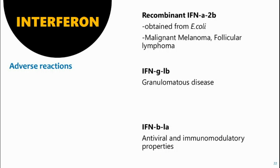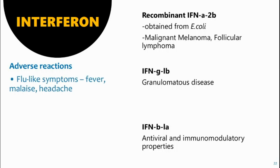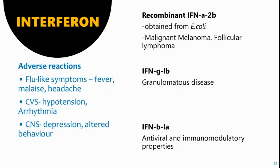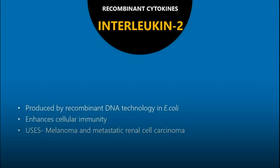Interferons are of many types, some of which are recombinant IFN-alpha-2b, IFN-gamma-1b and IFN-beta-1a. Recombinant IFN-alpha-2b is obtained from Escherichia coli and is used in malignant melanoma and follicular lymphoma. IFN-gamma-1b is used in granulomatous disease, and IFN-beta-1a is used for its antiviral and immunomodulatory properties. Adverse reactions include flu-like symptoms such as fever, chills and headache; in the cardiovascular system, hypotension and arrhythmia; and in the CNS, depression and altered behavior.